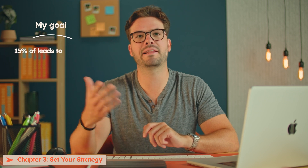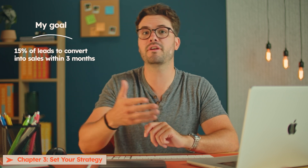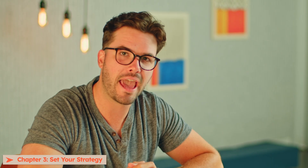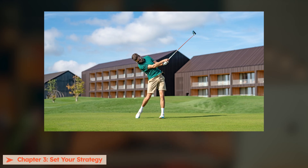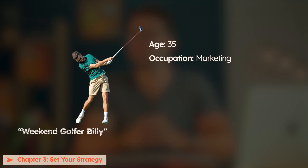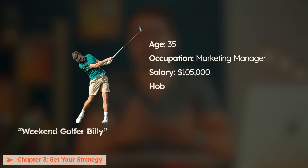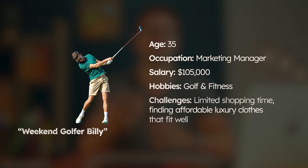Number one: strategy. Your strategy should have three key points. The first key point is a goal. For my example, I'd want 15% of my leads that have entered the campaign to convert into sales within three months. The next key point is identifying your buyer persona to target — a semi-fictional character that represents your ideal customer. My example is weekend golfer Billy, age 35, occupation marketing manager, makes about $105,000.